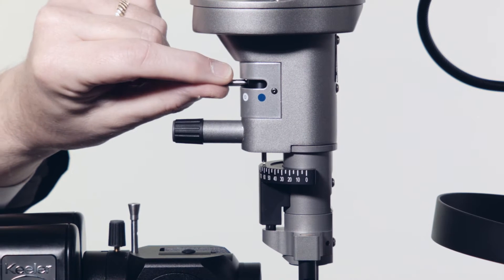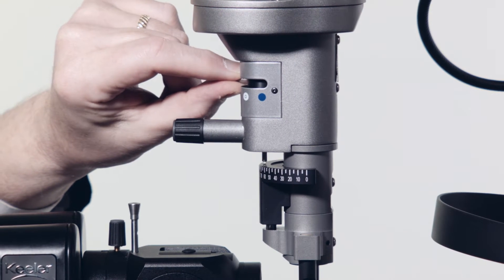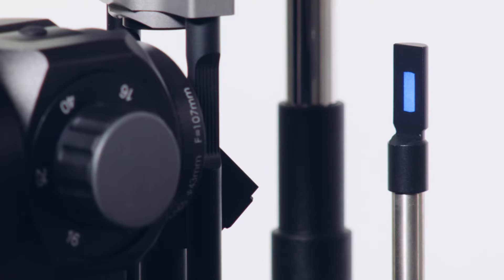The K-Series slit lamp offers a full range of filters required for examination. These filters are blue, neutral density diffuser, red free and clear.